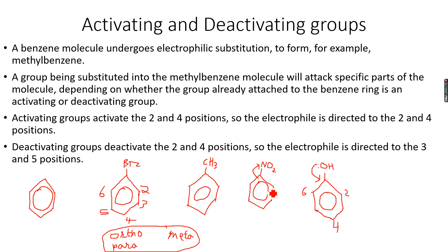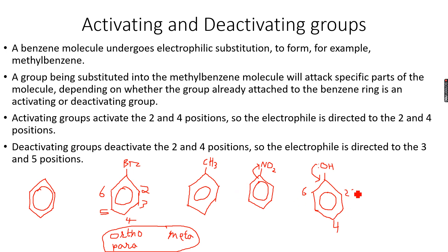Now, we were talking about nitrobenzene. What happens when a group withdraws electrons? In the previous case it was giving electrons, but here it is withdrawing electrons. So when it withdraws electrons, the negative charge density on the benzene molecule is lowered — here it was increased, but here it is lowered. So the two, four, and six positions are deactivated — before they were activated, meaning they had more negative charge on them, but here they are deactivated, meaning they have less negative charge.